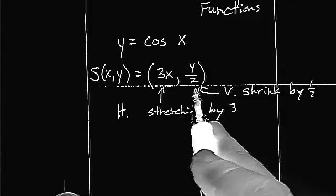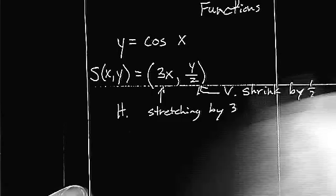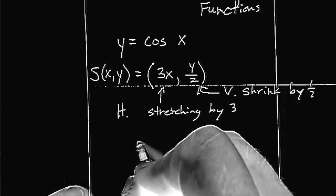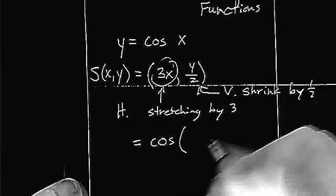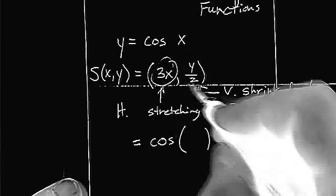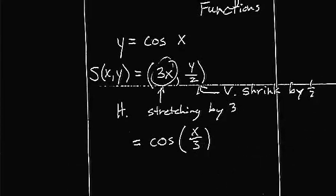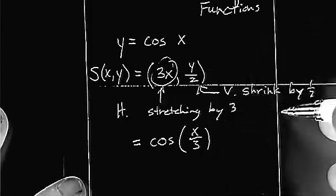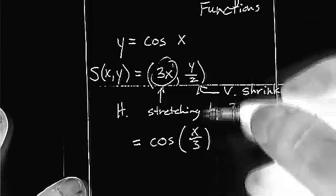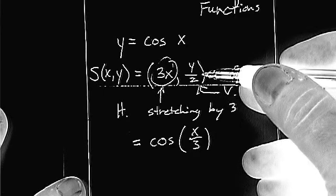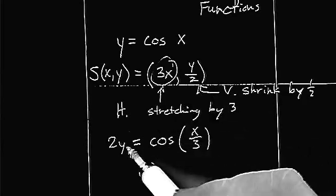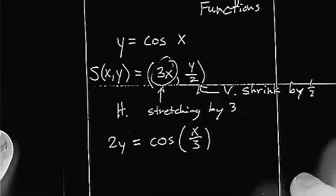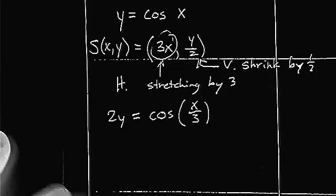Anyway, stretching by 3, shrinking by 1 half. Let's think about our replacements. When we replace inside the function, we are going to replace x with x over 3 — remember we use the opposite. And when we replace y inside, we have 2y, always replacing with the opposite. Instead of dividing by 2, we substitute with 2y.